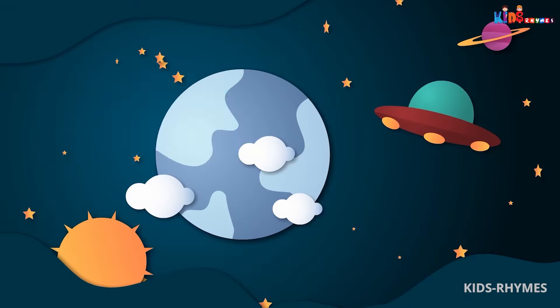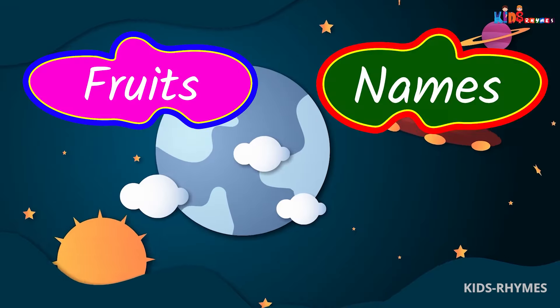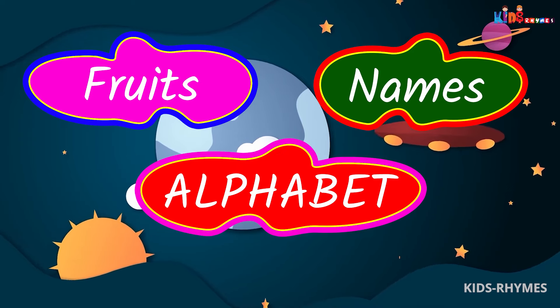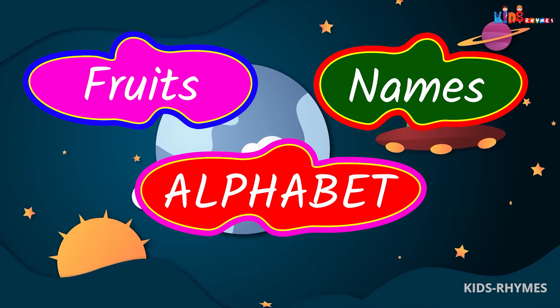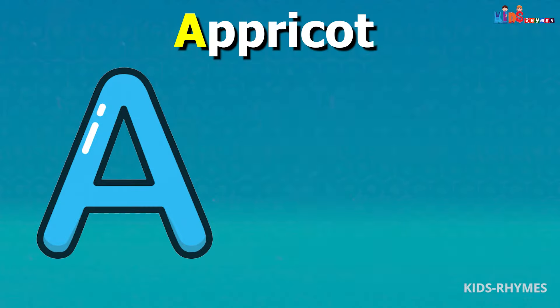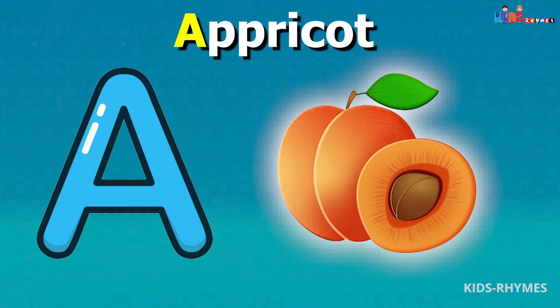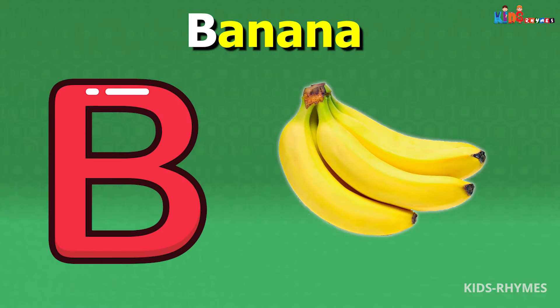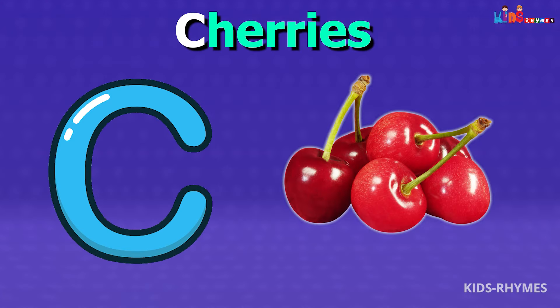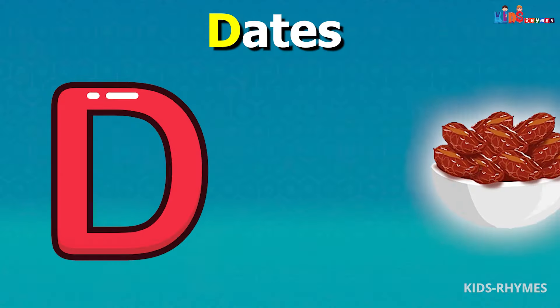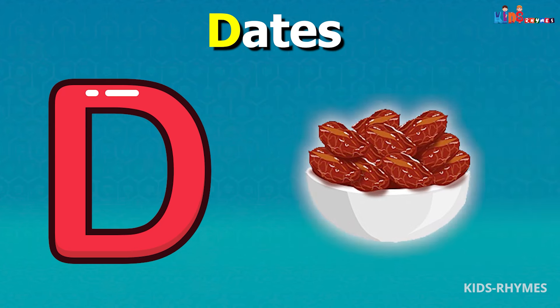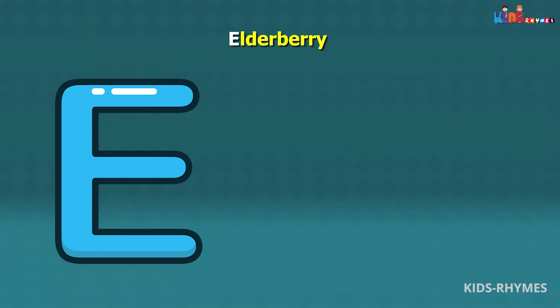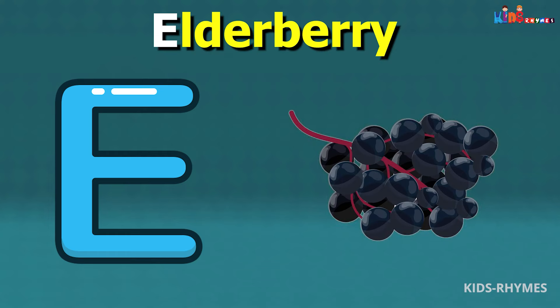Fruits names according to alphabets: A for apricots, B for bananas, C for cherries, D for dates, E for elderberries, F for figs.